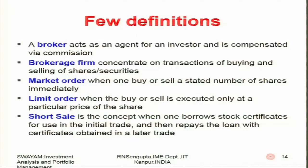Market orders are when one buys or sells a stated number of shares immediately depending on the market — for example, buy 10 shares of Tata Motors or sell 12 shares of Tata Steel. The broker acts according to whatever instructions have been given by the investor. A limit order means the broker buys or sells and executes that operation only at a particular price of the share — for example, if the price of Tata Steel falls below 1200 rupees do not sell, or if the price of Reliance goes above 2000 rupees do not buy. These are limit orders based on which brokers operate.